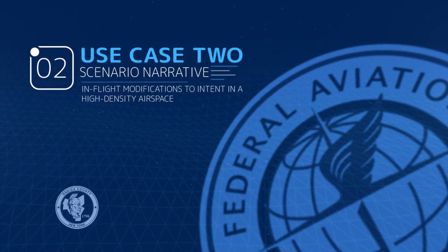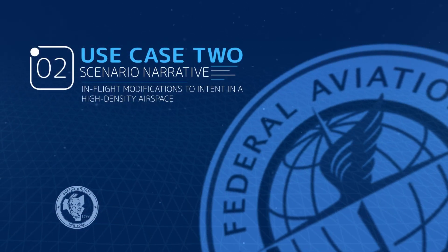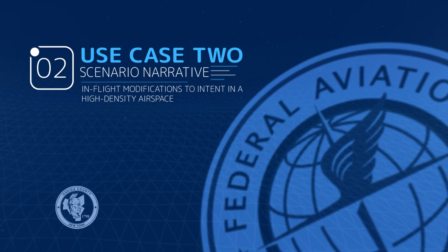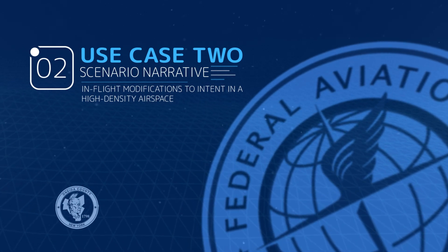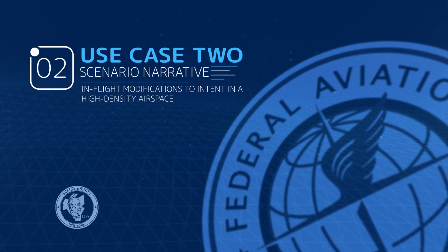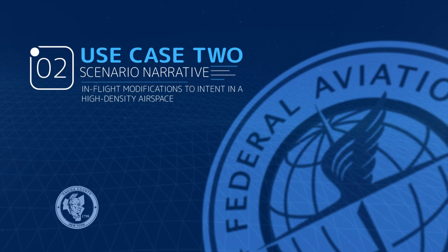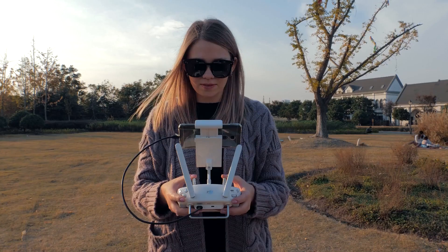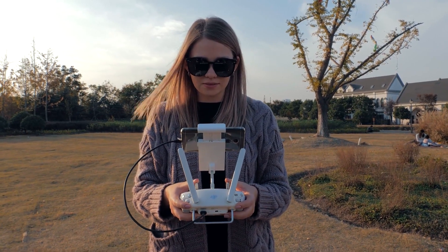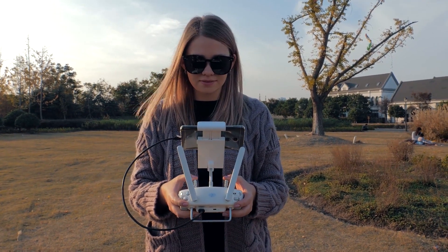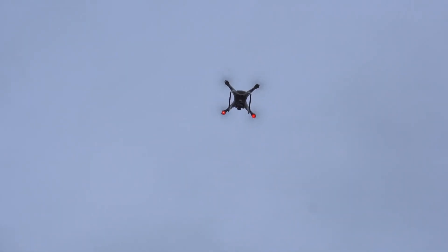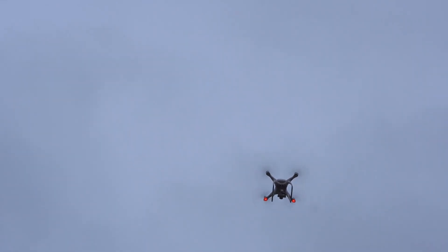The Use Case 2 narrative demonstrates in-flight intent changes in a high-density airspace. Now that the UAS operation plans are deconflicted and successfully launched over Rome, there are new challenges to face. Megan, the recreational videographer and influencer, experiences a communications failure and her drone is labeled contingent or rogue, creating risk for other airborne UAS.